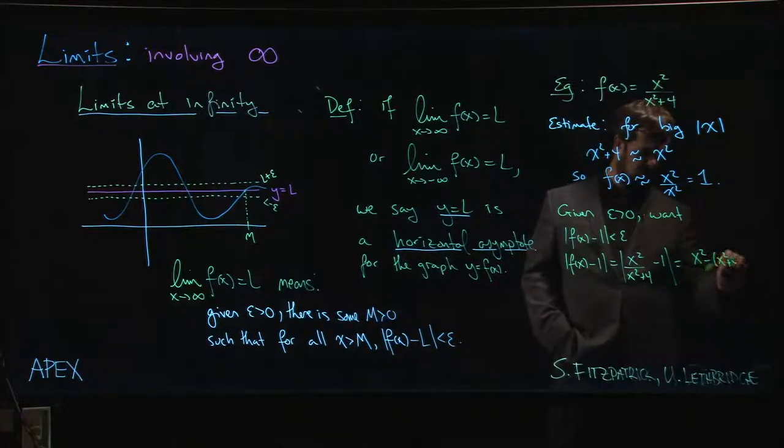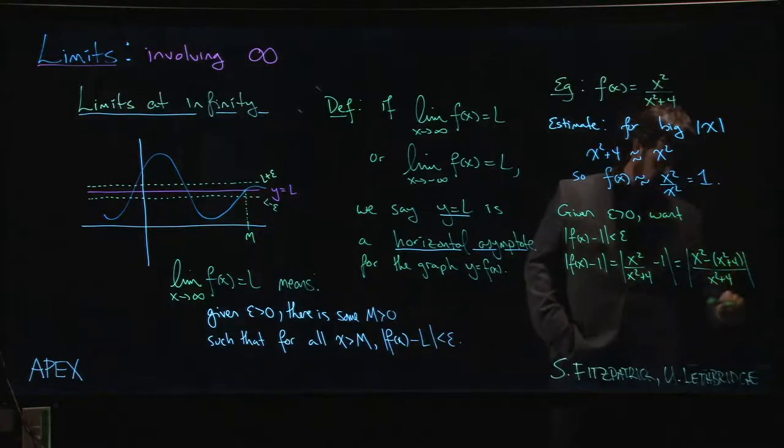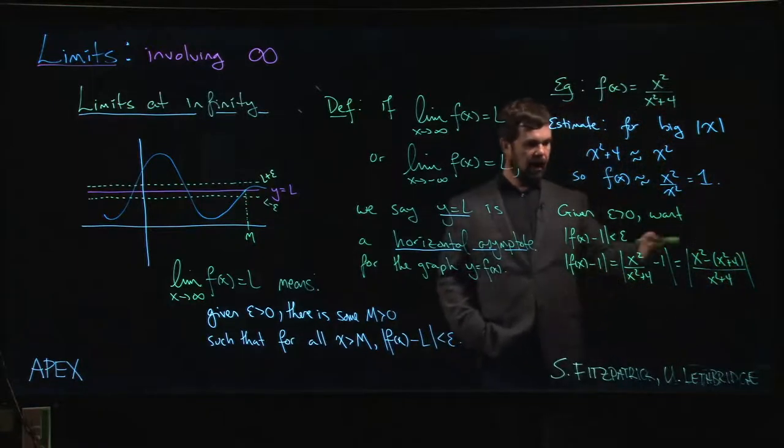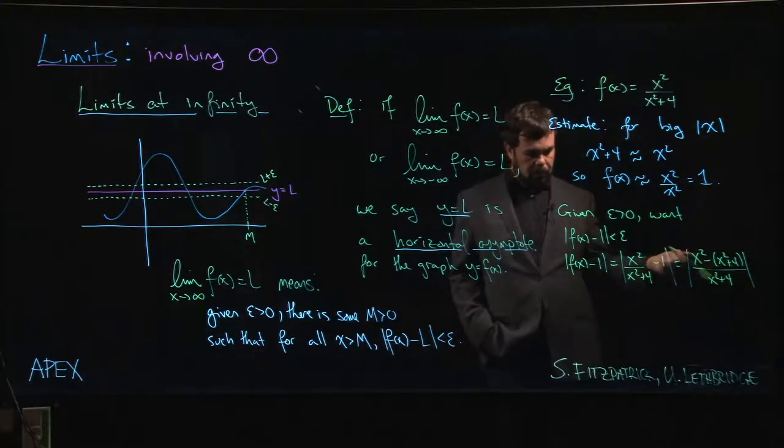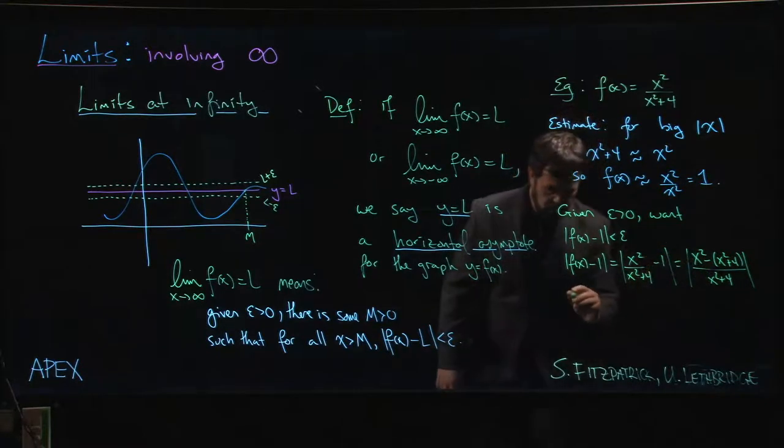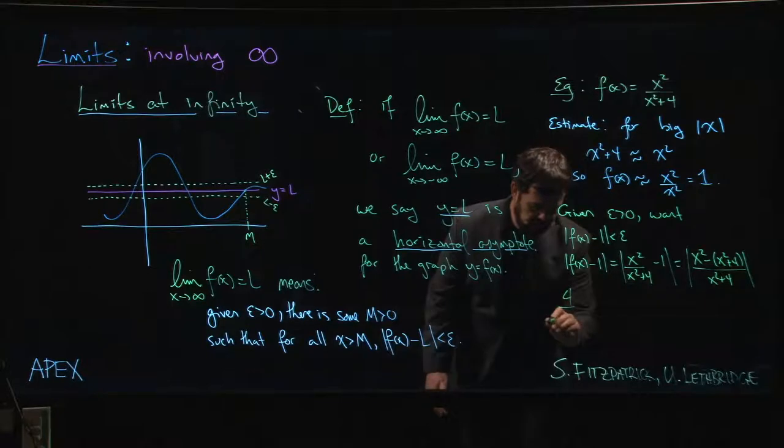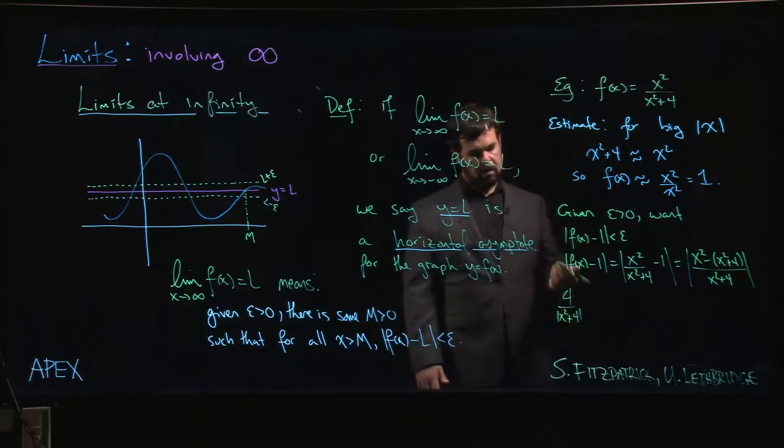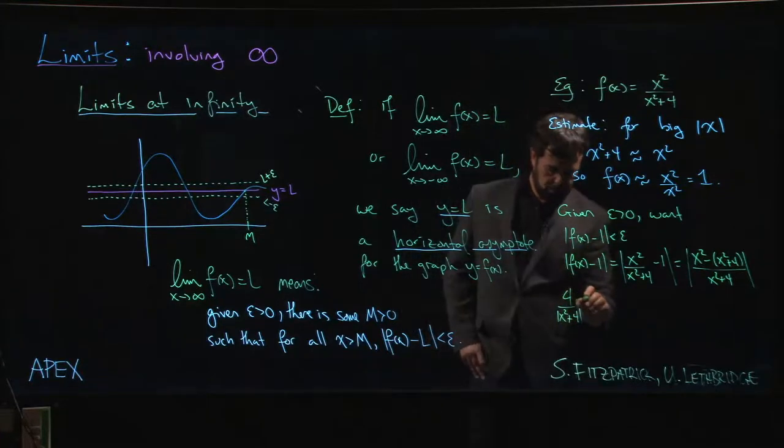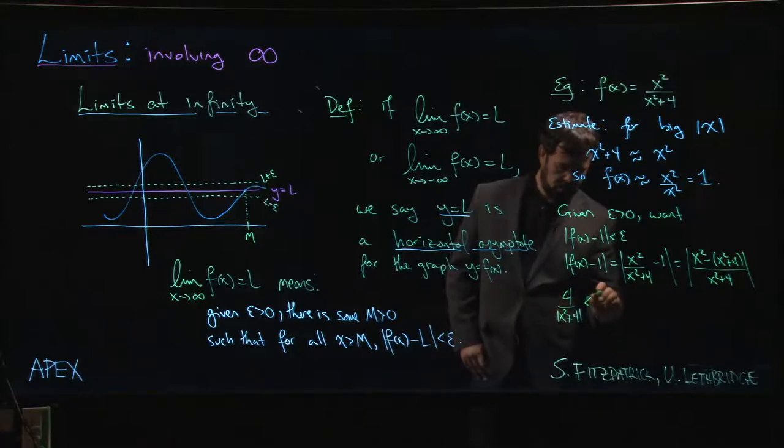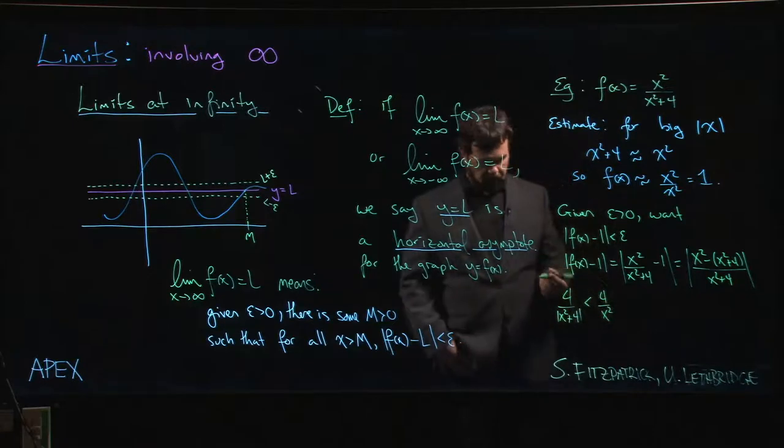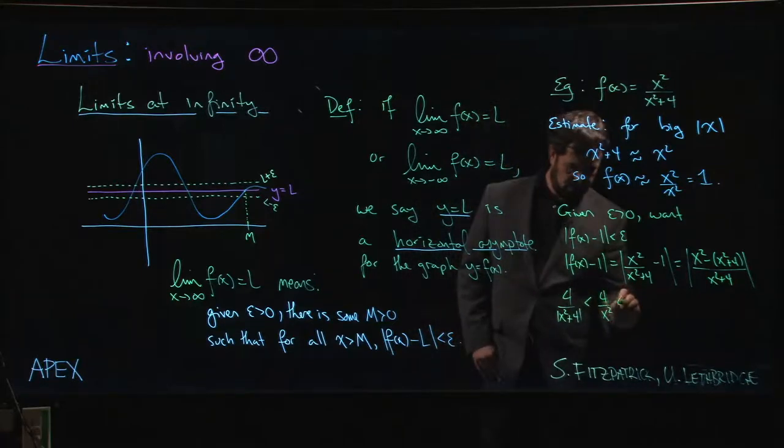We're going to cancel; absolute value of minus 4 is 4. So we would need 4 to be less than absolute value of x squared times epsilon over 4. And we might notice that this thing is smaller than just 4 over x squared. And we want that to be less than epsilon.